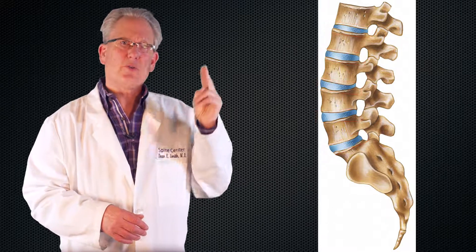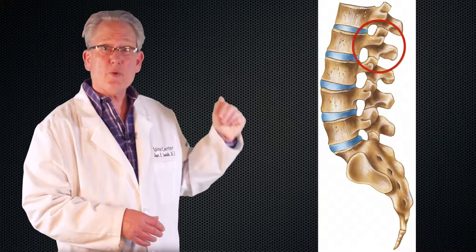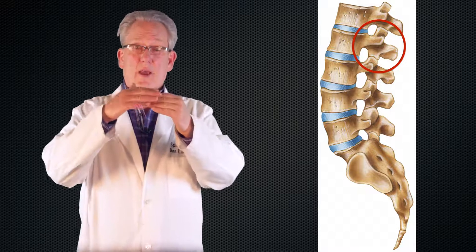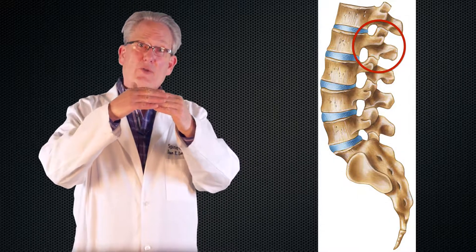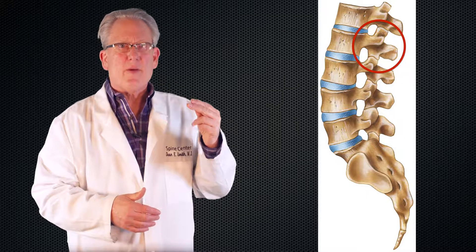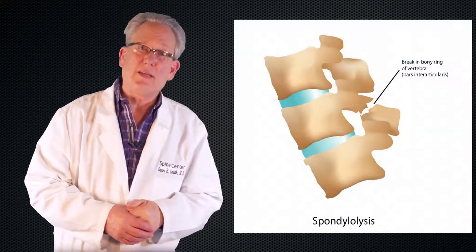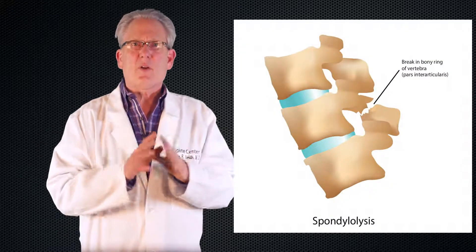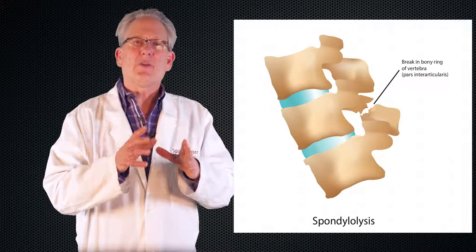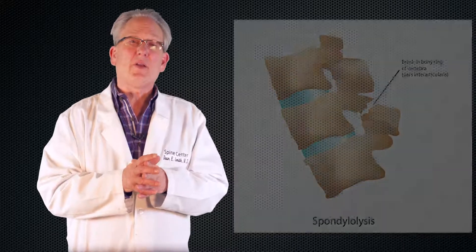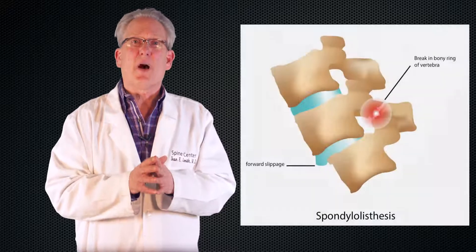Now, each bone sends two processes up and two down, and then they're connected to the bone above and below by joints. If the two processes going down have a defect, that's called a spondylolysis. This spondylolysis can allow instability, and that instability can allow one bone to slip on the other bone. This slippage is called spondylolisthesis.